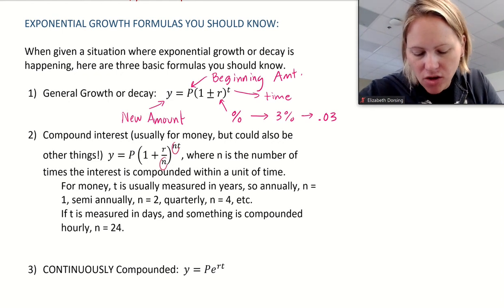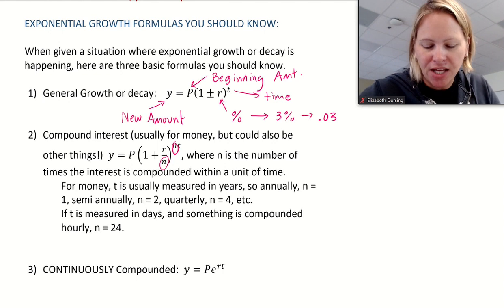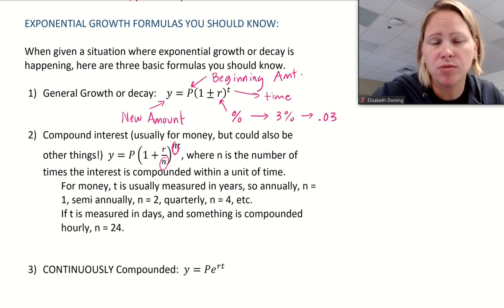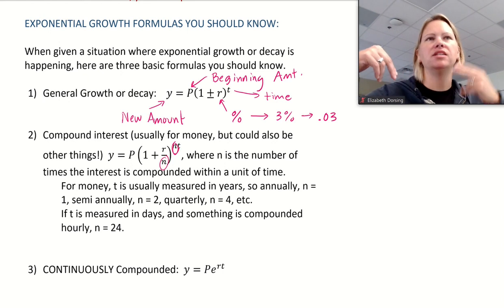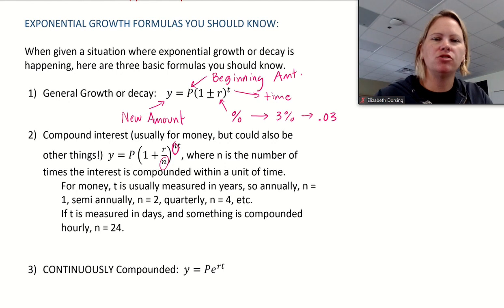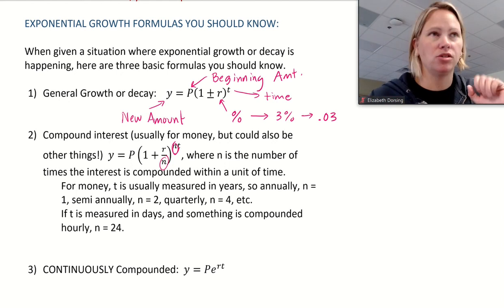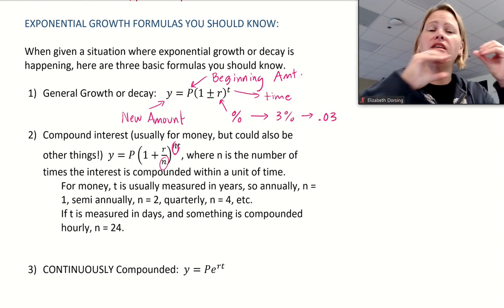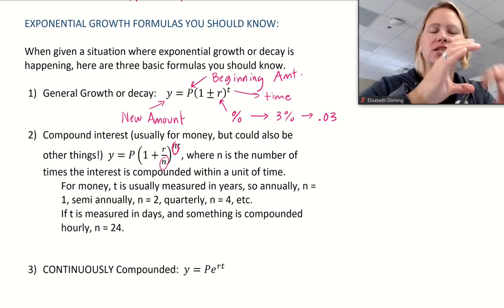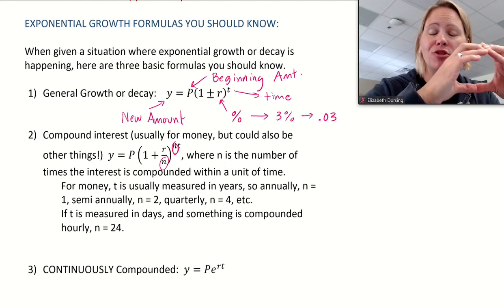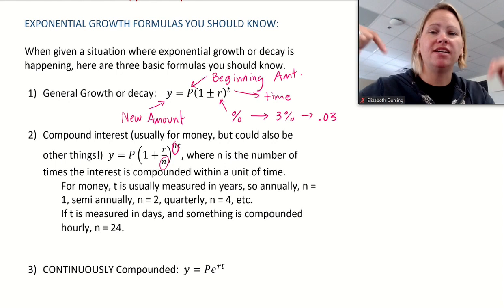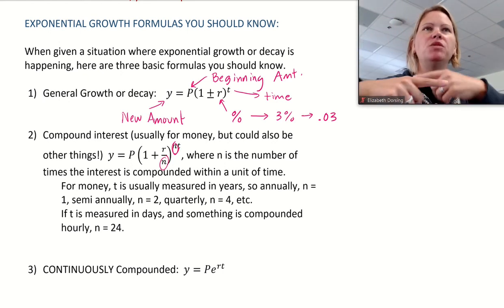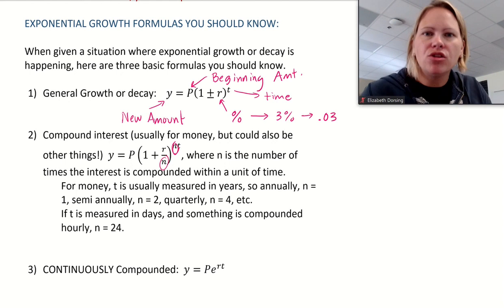The second formula has all the same letters but adds N, which refers to the number of times we compound. Usually we talk about it in terms of interest. If I invest money at a 3% interest rate compounded monthly, at the end of month one I add 3% of whatever's in the account. Then in month two, I calculate interest on whatever grew in month one — so I'm calculating interest on interest. Compounding means it just keeps getting bigger, and compound interest is good for the person earning it.